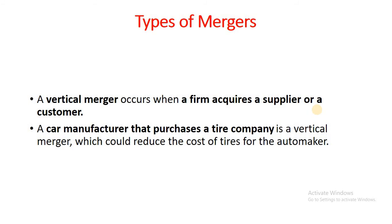Then, Vertical Merger. A vertical merger will occur if a firm acquires a supplier or a customer. For example, if a car manufacturer acquires a tire company, it will be termed as a vertical merger. The objective of the car manufacturer could be to reduce the cost of tires for the cars.